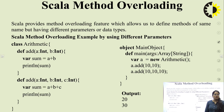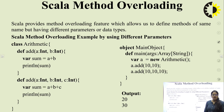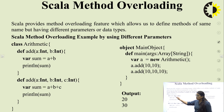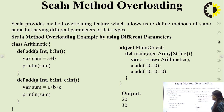Next is Scala method overloading. Scala provides method overloading, which allows us to define methods with the same name but different parameters or data types. In the first example of overloading by different parameters, there are two methods with the same name 'add' but different parameter counts. The first method takes two parameters and the second takes three parameters (A, B, C). In main, a.add(10, 10) calls the first method, and a.add(10, 10, 10) calls the second.